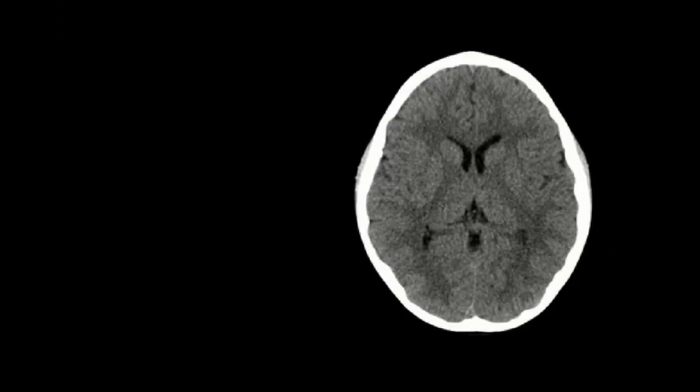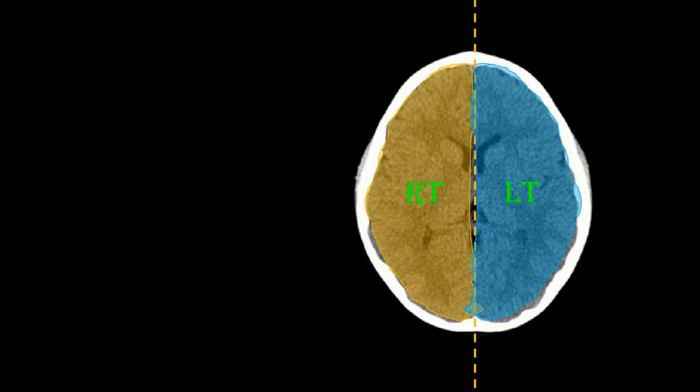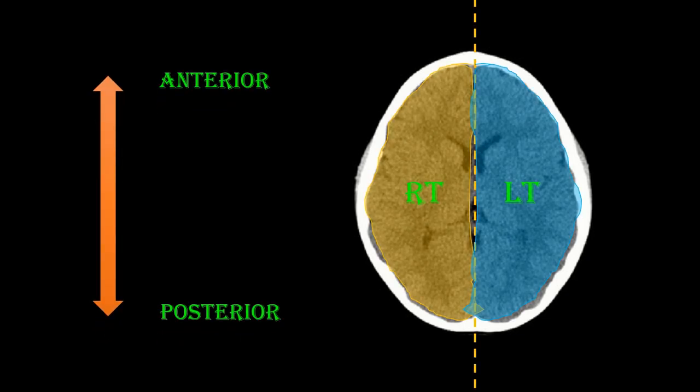To summarize: for a transverse section, laterality and anterior-posterior orientation work as described. Thank you all for tuning in. This has been the basic orientation of CT, and we have stacked-up anatomy and subsequently certain acute pathologies in CT coming up next.